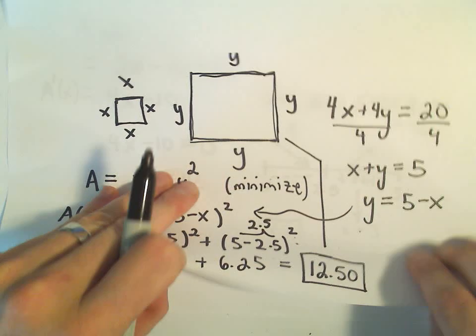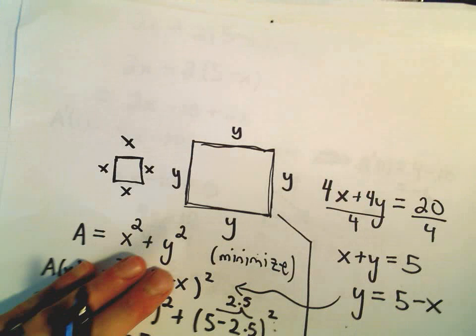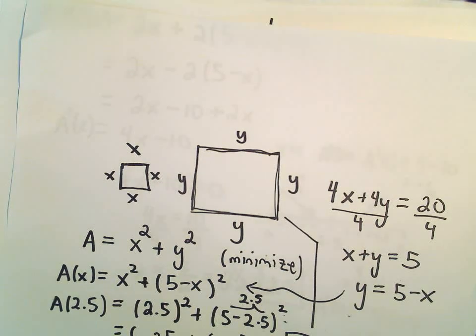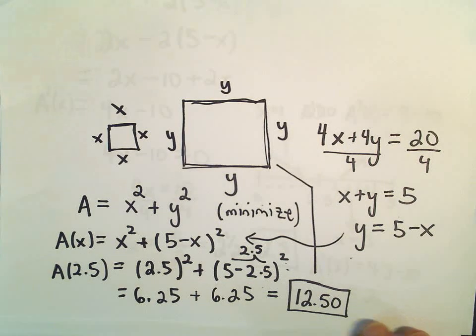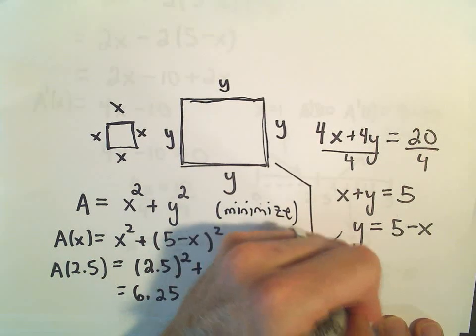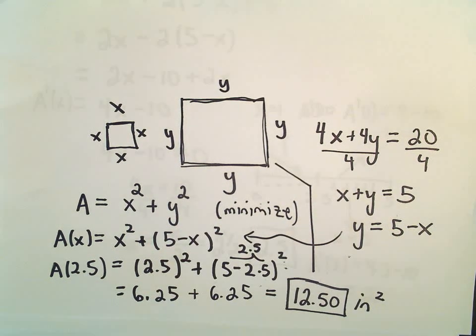Obviously, I don't know if we had units on this one. Yes, we did have inches. So just to clarify, it would be 12.5 square inches would be the minimum possible area of those two squares.